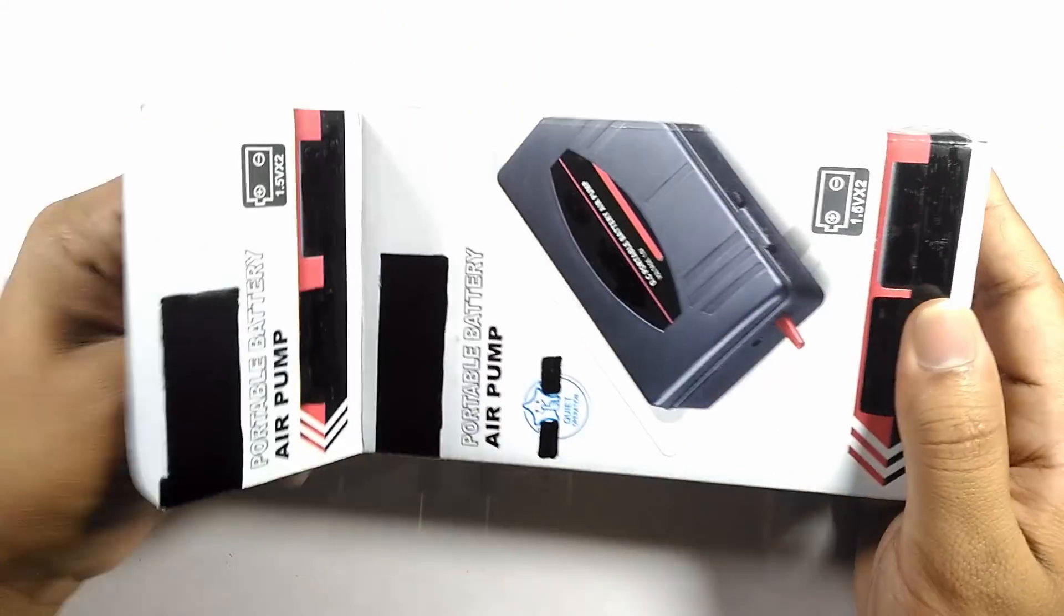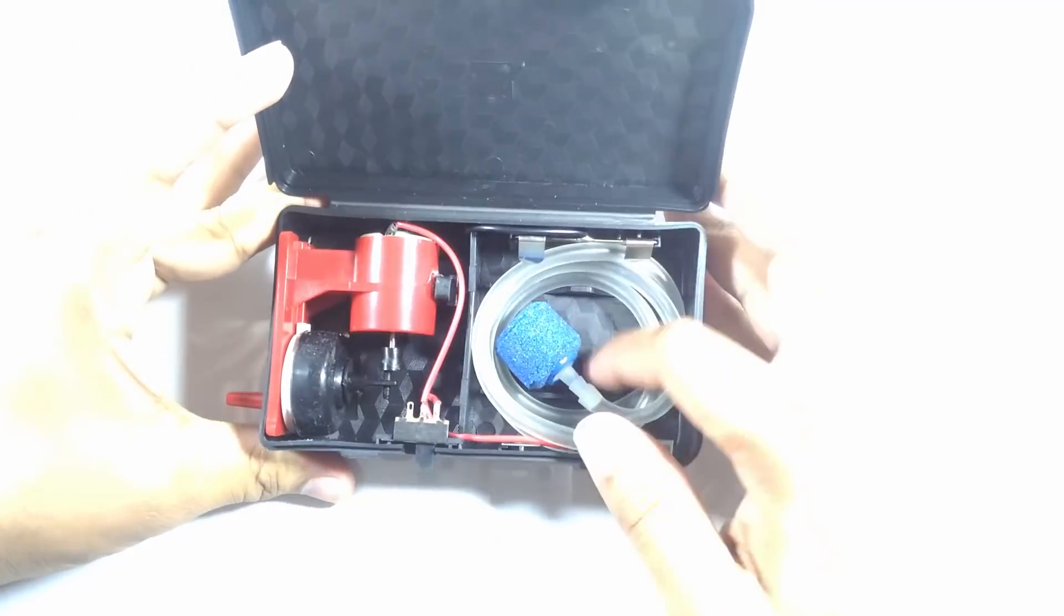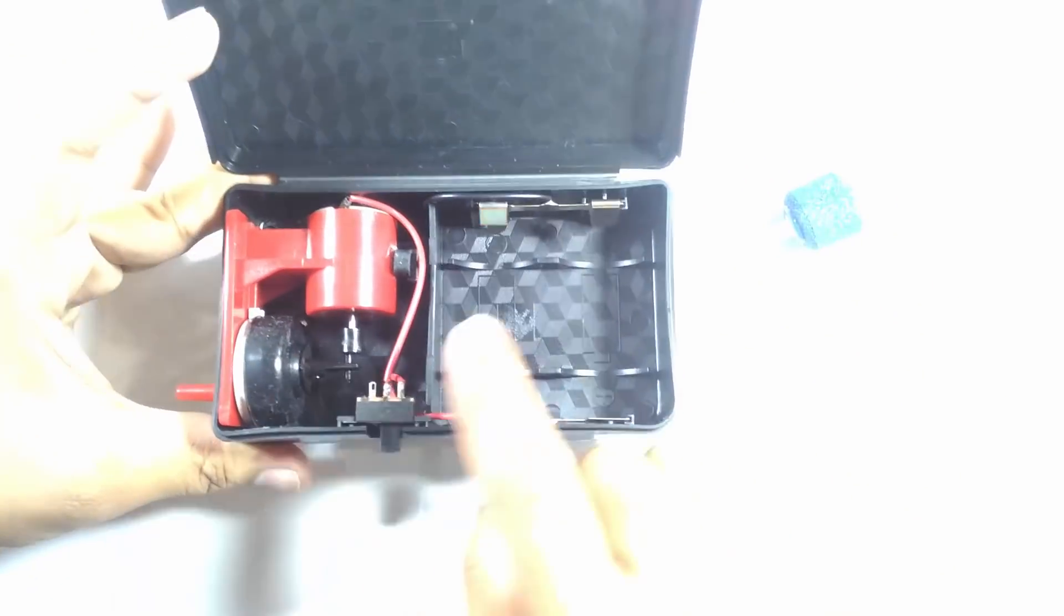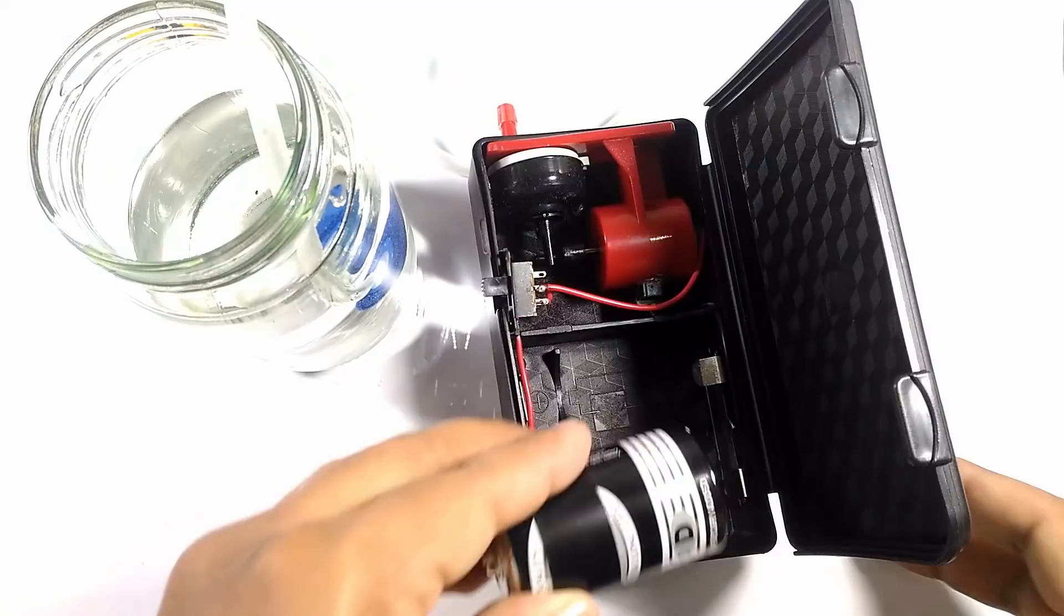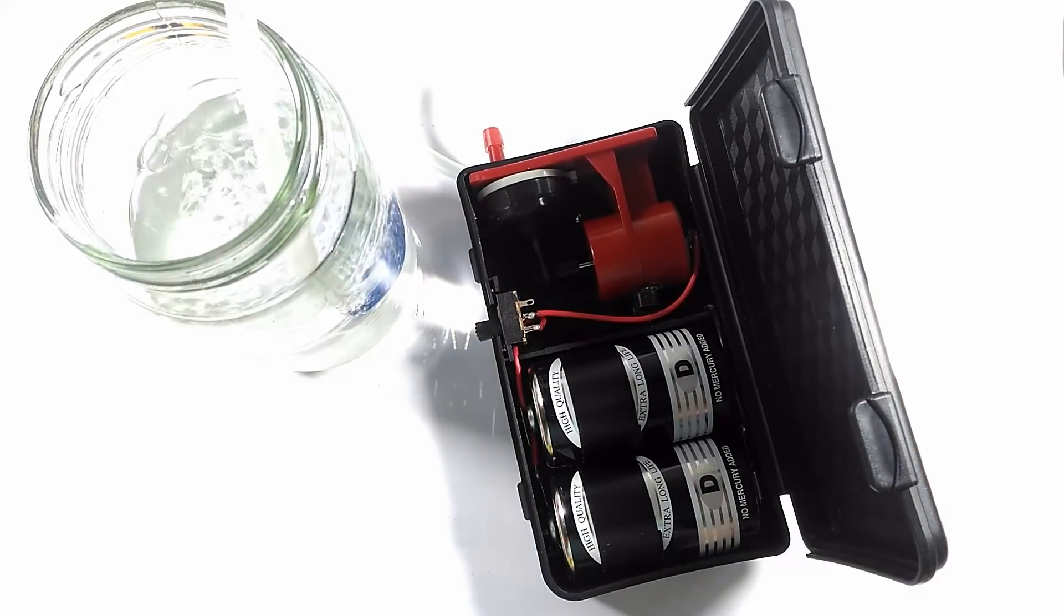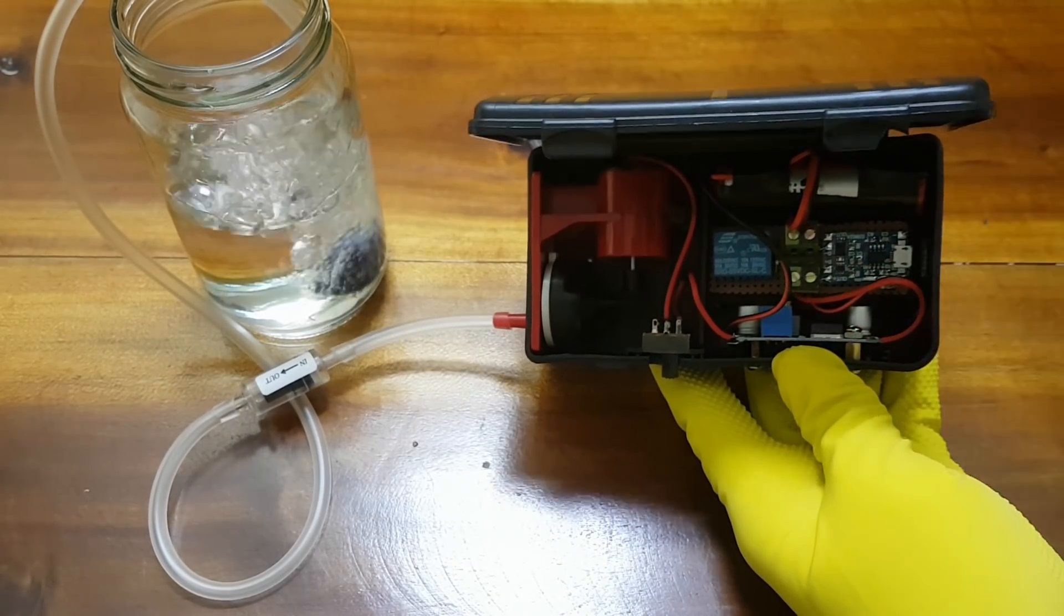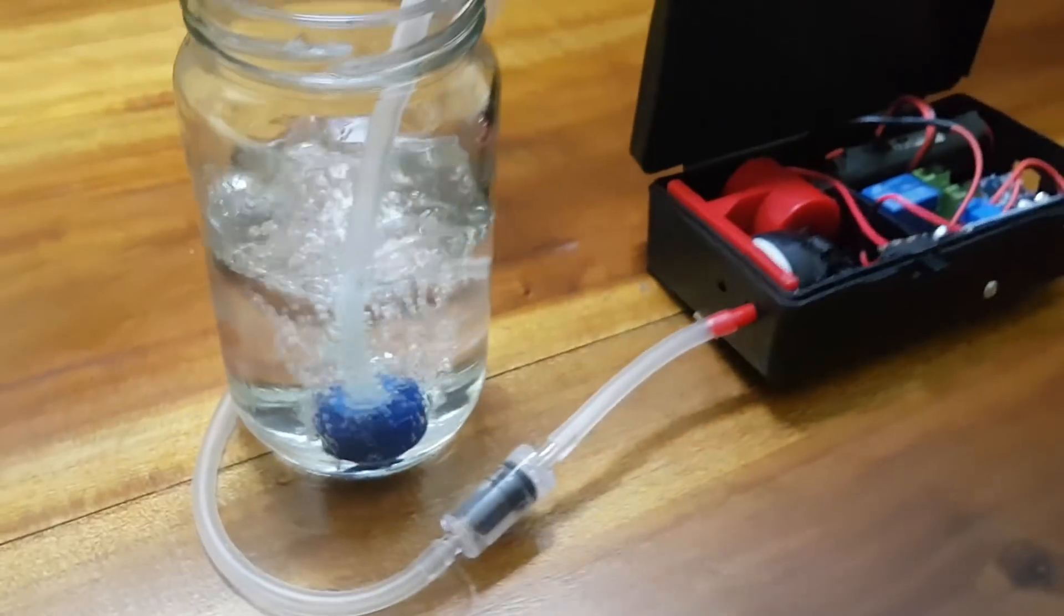Battery powered air pumps are common and can easily be bought from local fish stores, but the downside to such pumps is that you need to replace or recharge the batteries each time they run out. You also need to be there to switch it on in case of a power loss. In this video I will show you how to modify such a pump to recharge and start up automatically in case of a power loss.